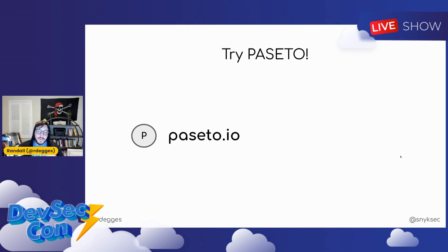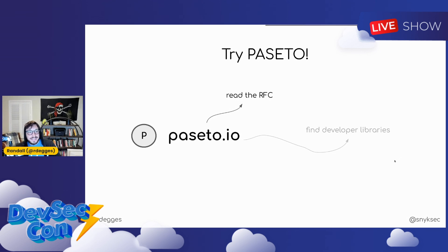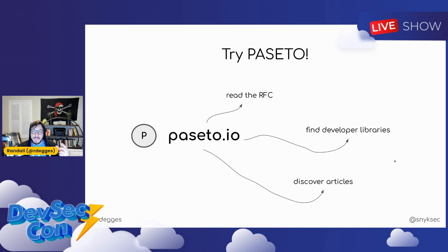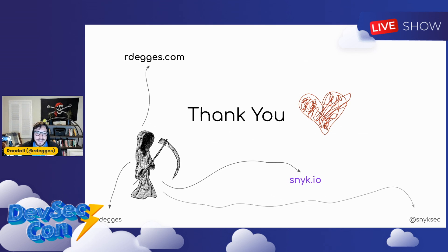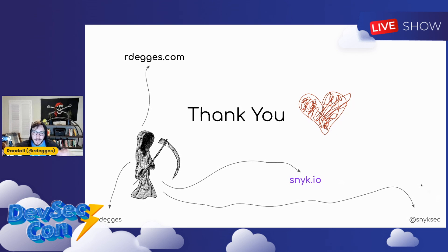How do you get started? You can go to the website paseto.io and play around with it. There's an RFC, lots of developer libraries in many different programming languages, great articles, presentations, and tons of useful resources linked there. If you prefer watching videos, go on YouTube and search Paseto — you'll find some talks and research on the subject.